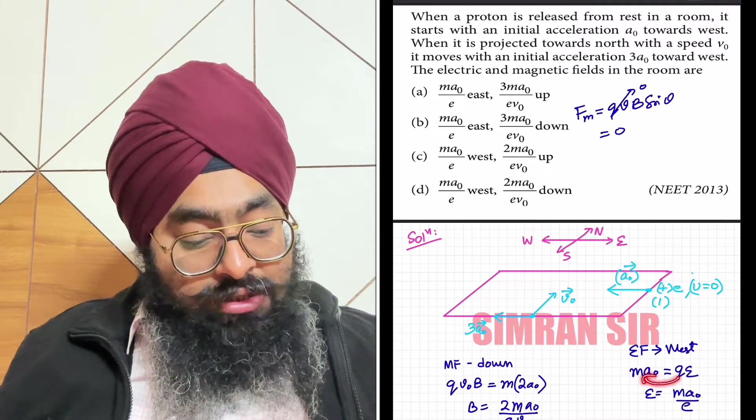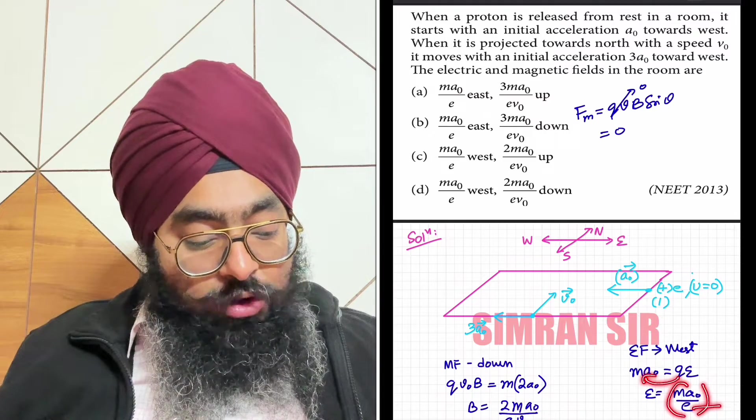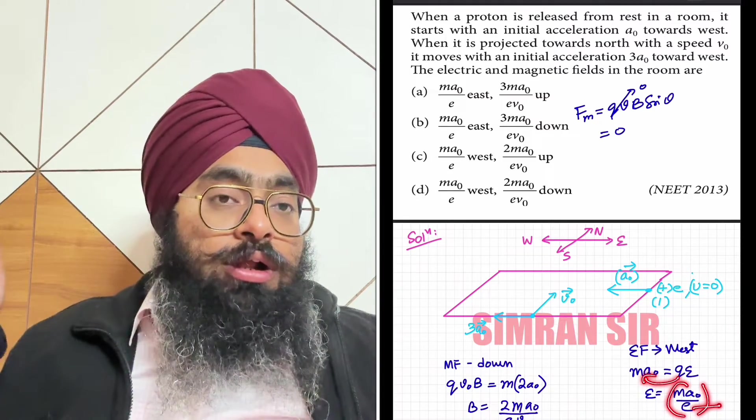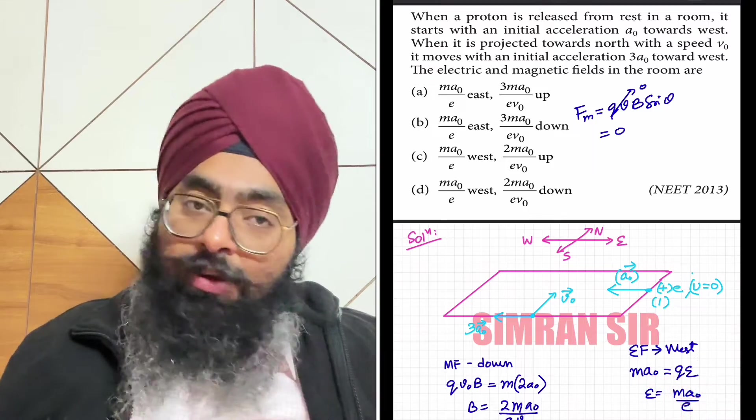Electric force equals charge Q times E, and force equals ma0. So E equals ma0 by e. In place of Q, we put e, because the charge on a proton is equal to e.